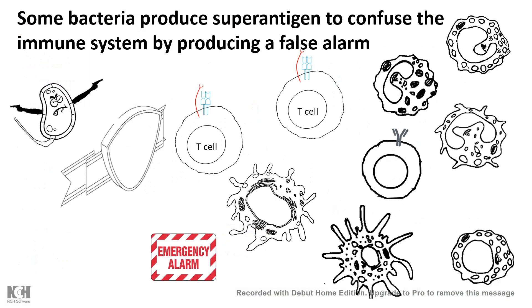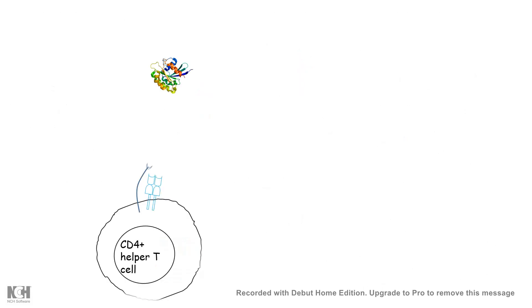In this video I'll be discussing the concept of superantigens. As the name suggests, superantigens are a little bit different from normal antigens. Some bacteria produce superantigens to confuse the immune system by producing a situation equivalent to a false alarm. It's a kind of protective mechanism by which some bacteria and in some cases some viruses are able to confuse the body's immune system.